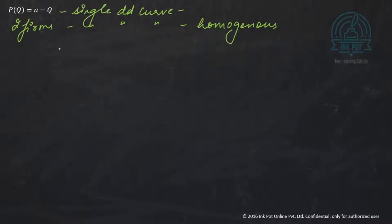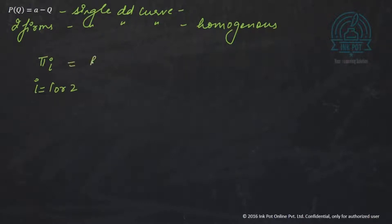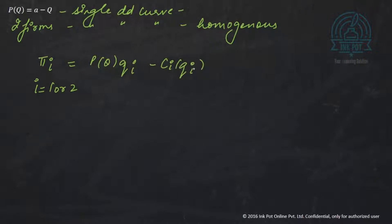This demand curve is the demand curve for the industry. We can rewrite the profit of the ith firm, where i can be 1 or 2 in this two-firm industry, as profit = P(Q) times the quantity of that ith firm, minus the total cost function of the ith firm. This is the profit of the ith firm, and given this, we figure out the quantity which maximizes profit for the ith firm.